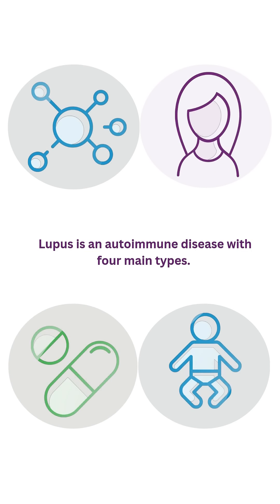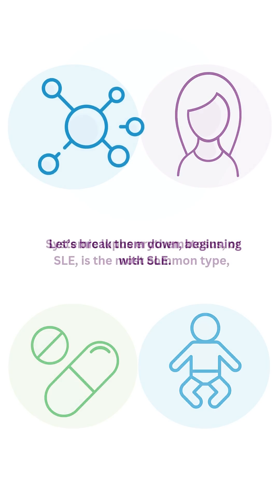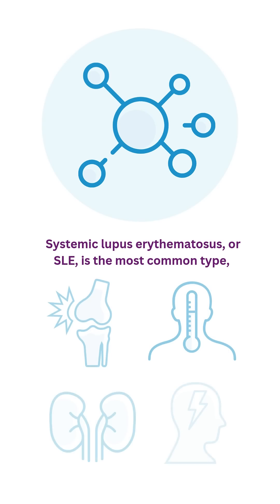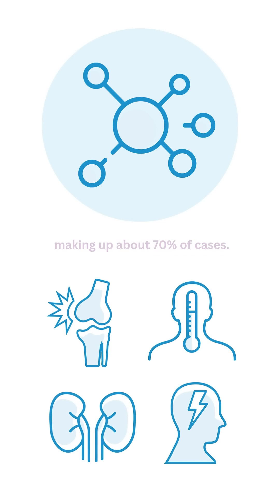Lupus is an autoimmune disease with four main types. Let's break them down, beginning with SLE. Systemic lupus erythematosus, or SLE, is the most common type, making up about 70% of cases.